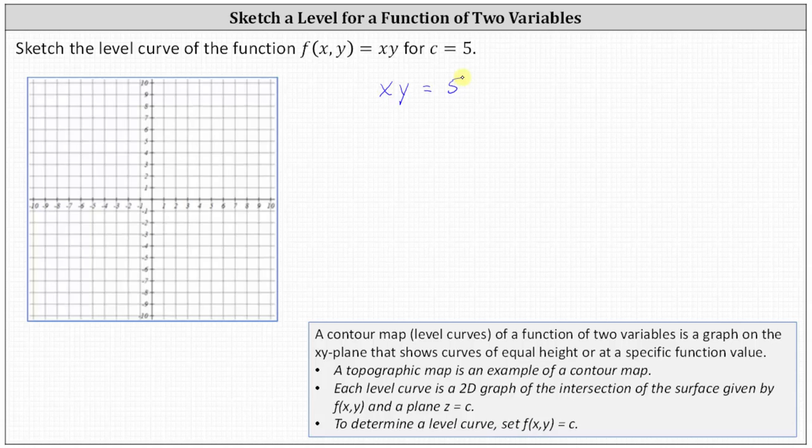But to graph this on the coordinate plane, let's go ahead and solve for y by dividing both sides by x. Simplifying, we have y equals 5 divided by x, which we should recognize as a rational function. So now we'll graph the level curve as this rational function.